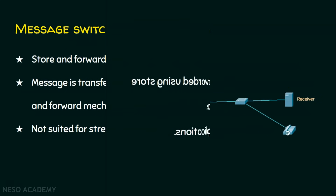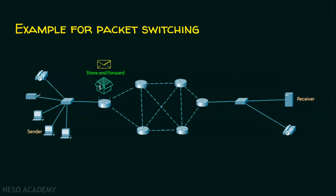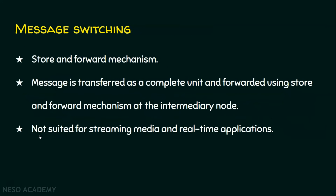In the example, the sender's big message is broken into individual pieces, all collected and stored at the intermediary node. After getting the complete message, it is forwarded to the receiver. Message switching is not suited for streaming media and real-time applications — for example, two people talking over VoIP. The intermediary node can't collect all data before forwarding in real-time communication.